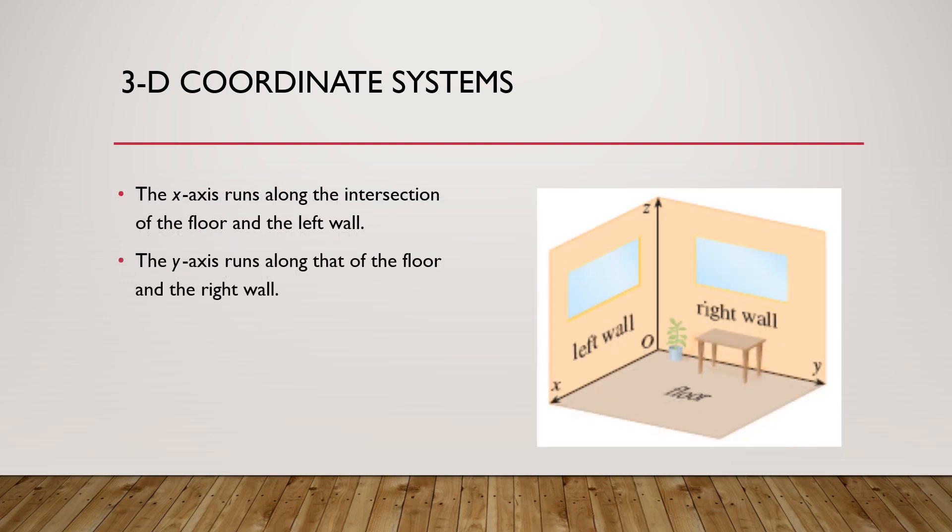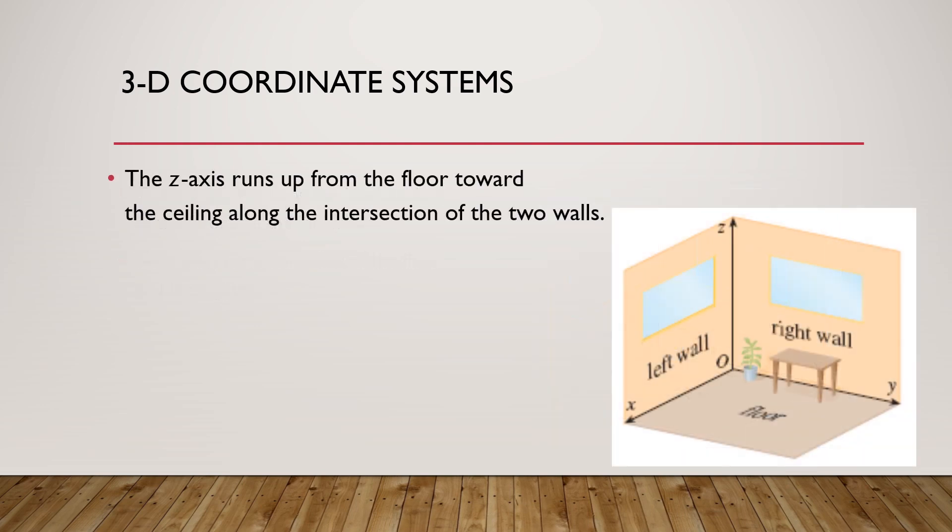The x-axis runs along the intersection where the floor and the left wall intersect, the y-axis runs along the floor and the right wall intersect, the z-axis runs upwards, that is, it points towards the sky where the intersection of the two walls happened.